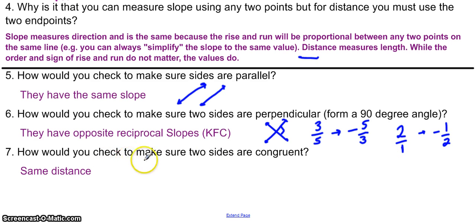And 7, how would you check to make sure two sides are congruent? They'd have the same distance. Again, using Pythagorean theorem, a squared plus b squared equals c squared, or distance formula, whichever you prefer.